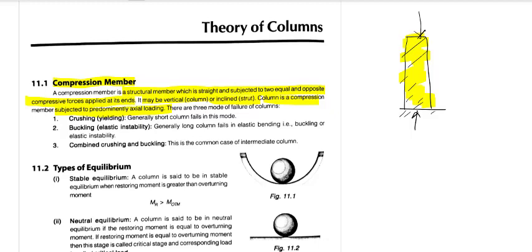There are three modes of failure of a column. One is crushing — that is failure by yielding. Generally short columns fail this way. For example, if you have a Pepsi can, when you empty the can and put a load on top of it, it gets completely crushed. So that is failure of a short column due to crushing pressure.